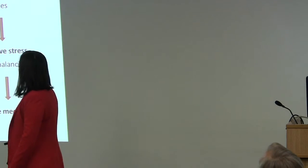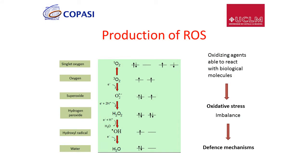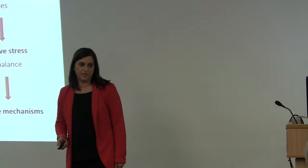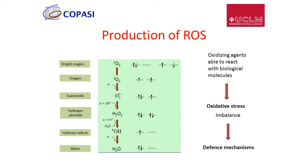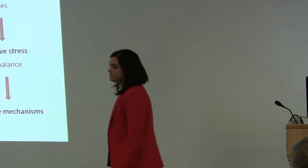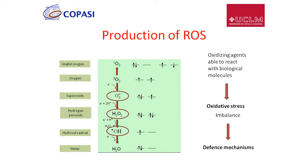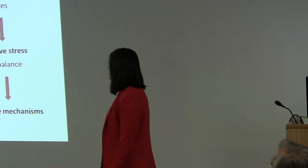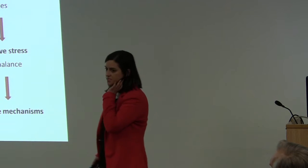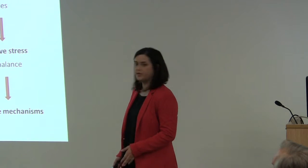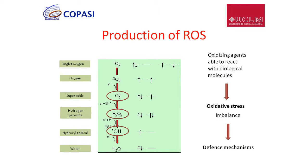I would like to talk about the production of ROS, or reactive oxygen species. As you know, oxygen is essential for aerobic organisms, and this compound can be reduced producing superoxide radicals, hydrogen peroxide, or hydroxide radicals — the reactive oxygen species. They are oxidizing agents able to react with biological molecules, producing in some situations oxidative stress. Oxidative stress is an imbalance between the accumulation of reactive oxygen species and the ability of the system to reduce them and prevent cellular damage. That is why all organisms need some defense mechanisms.